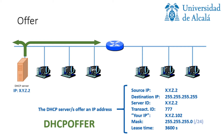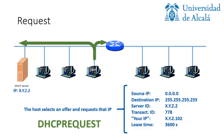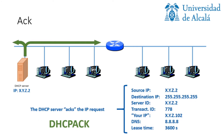The lease time represents for how long this IP assignment is valid. Afterwards, the host will usually request one of the offers previously received. In this case, the host is requesting the offer already received from this DHCP server — the .102. Finally, the server acknowledges that request and provides additional information such as the DNS server, assigning the requested IP and configuring the lease time and so on.